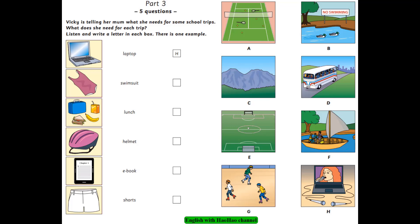3. Then, on Wednesday, we have a sightseeing trip. We have to go in the coach for one hour. It's boring. I want to take an e-book to read. Well, there's one on the table. Read that. Is it about that famous tennis player? I want to read that. Yes, I think so.